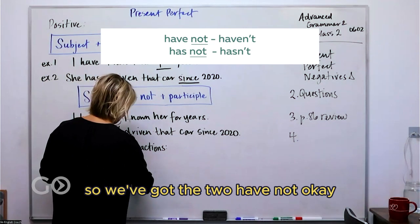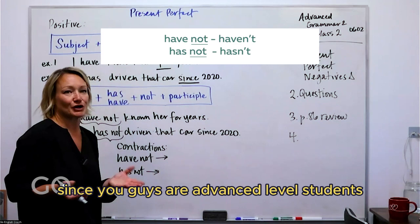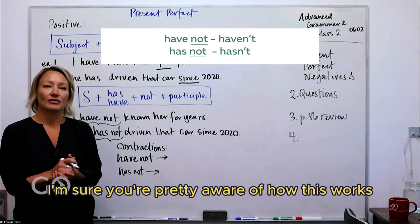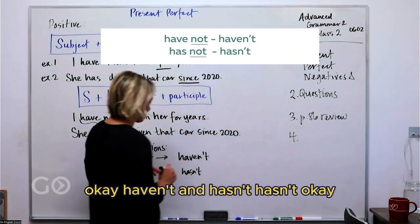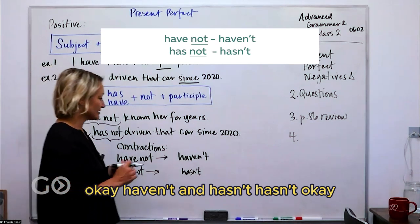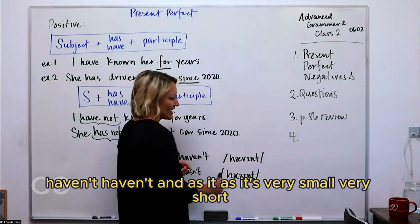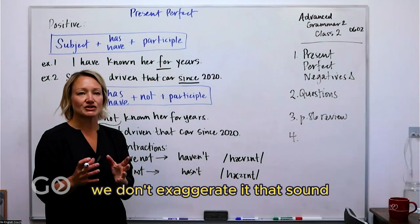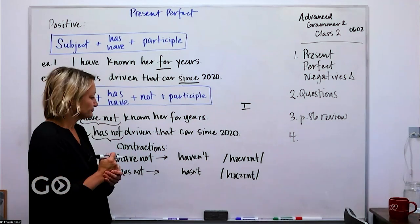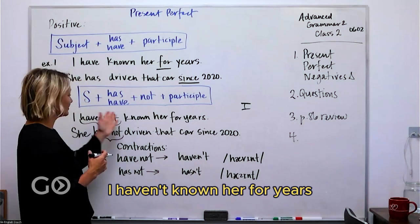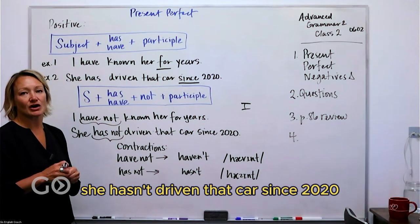We've got 'have not' and 'has not.' Since you guys are advanced level students, I'm sure you're pretty aware of how this works — we combine them and we've got 'haven't' and 'hasn't.' Let's look at the pronunciation: haven't, haven't, and hasn't, hasn't. It's very small, very short — we don't exaggerate it. That sound is literally never exaggerated because it's a very short, small, relaxed sound. Just get comfortable using those. 'I haven't known her for years. She hasn't driven that car since 2020.'